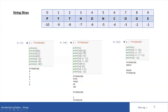So when I say S[0:4], it will print p, y, t, h — these four characters. You can see the output: p, y, t, h. Always remember in the case of a slice, it is including the start index and excluding the end index.